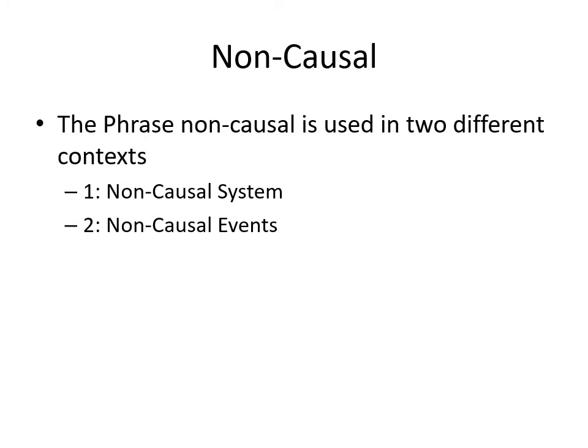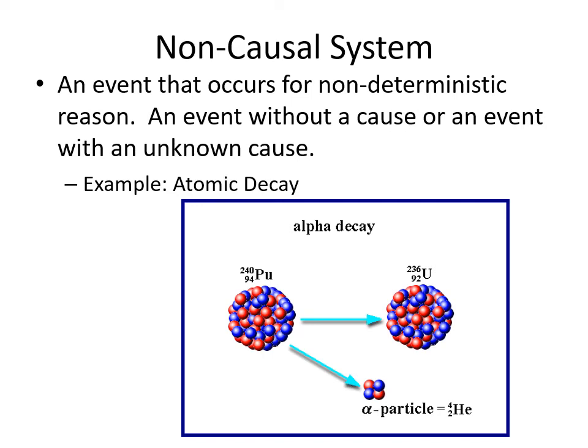So what's a non-causal system? The term non-causal gets a little confusing because it's used in two different ways. First, it describes systems that are non-causal — like radioactive decay, where we don't know what causes it. At the very least, a non-causal system is something that may be causal but we just don't know what the cause is. Or it could be a purely non-causal system, like quantum mechanics believes in things that are purely random with no causality. So a non-causal system is something that occurs for a non-deterministic reason — either an event without a cause or an event with an unknown cause.